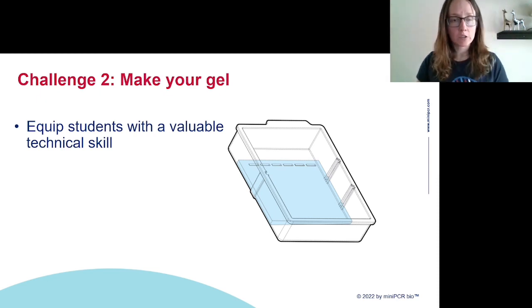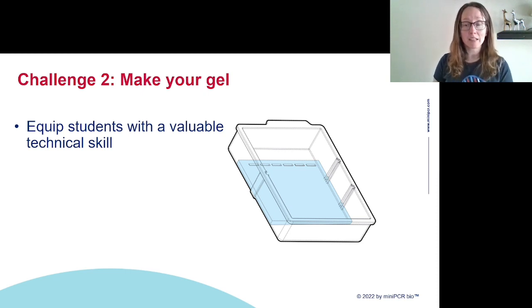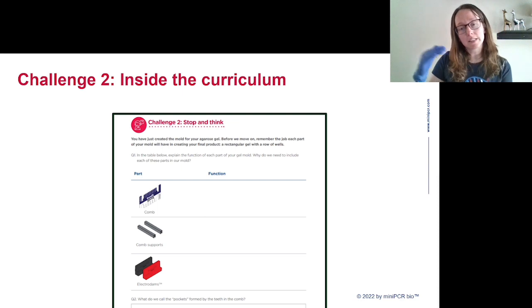That's challenge two. It's taking a prep step for you and turning it into a teaching moment for students. At the end of challenge two, what students walk away with is a valuable technical skill. Knowing how to pour a gel is like knowing how to micropipette. It's a really valuable skill that you'll use in almost any molecular biology laboratory. The guide for our From Circuits to Molecules activity is written to be conducive to a more pedagogical approach. Rather than just a list of steps that students have to walk through, the curriculum supports a critical thinking approach. The procedure is interspersed with stop and think assessments that give students a chance to apply their understanding.